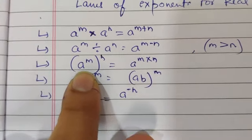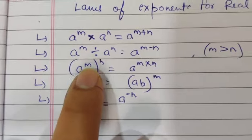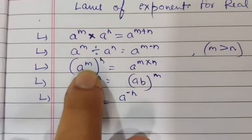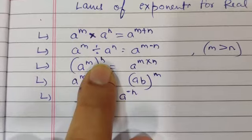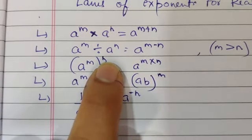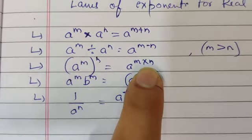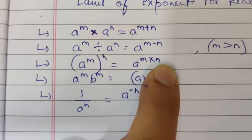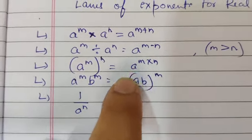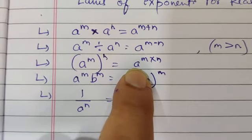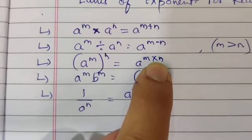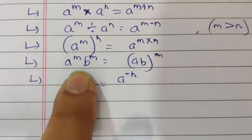The third law of exponents is A to the power M, whole to the power N — this is called power of a power. When there is a power of a power, the powers are multiplied. So the result is A to the power M times N, meaning the base stays the same and the powers are multiplied.